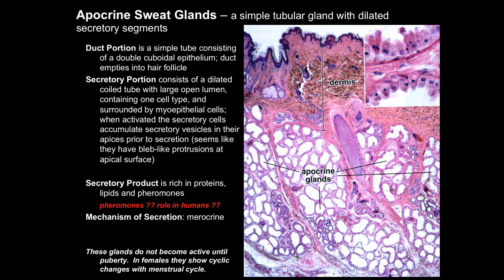Apocrine sweat glands are tubular glands with very dilated secretory components. The duct portion is a simple tube consisting of a double cuboidal epithelium, and it empties into a hair follicle. The secretory portion consists of a dilated coiled tube with a very large open lumen. There is one cell type, and these cells are also surrounded by myoepithelial cells. When activated, the secretory cells accumulate vesicles in their apices prior to secretion, and there appear to be bleb-like protrusions at the apical surface. The secretory product is rich in proteins, lipids, and pheromones, although we don't know how significant the role of pheromones is in humans — they certainly play an important role in other animals. The mechanism of secretion in these apocrine sweat glands is merocrine.